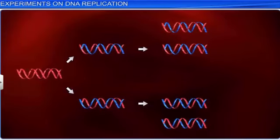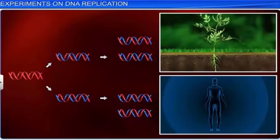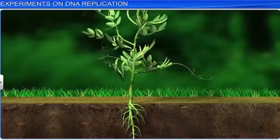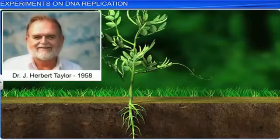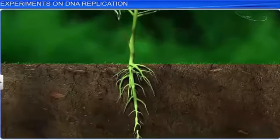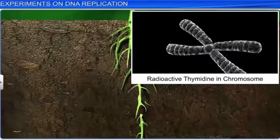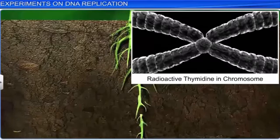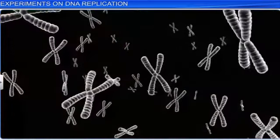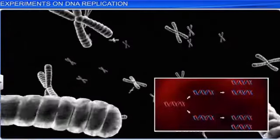Similar experiments were further conducted in higher organisms such as plants and human cells to prove the same. One such experiment was conducted by Dr. J. Herbert Taylor and his colleagues in 1958, in root tip cells of Vicia faba, or faba beans, using radioactive thymidine to determine the distribution of newly synthesized DNA in chromosomes. Here again, the experiment proved that DNA replication, even in chromosomes, was semi-conservative. Therefore, with multiple experiments conducted by different scientists, it was concluded that DNA replicates semi-conservatively.